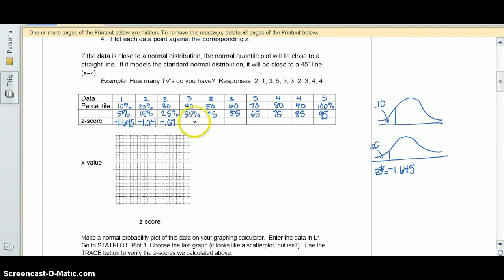The 35th percentile is negative 0.39. The 45th is negative 0.13. The 55th is positive 0.13. The 65th is positive 0.39. The 75th is positive 0.67. The 85th is positive 1.04. And the 95th percentile is positive 1.645.